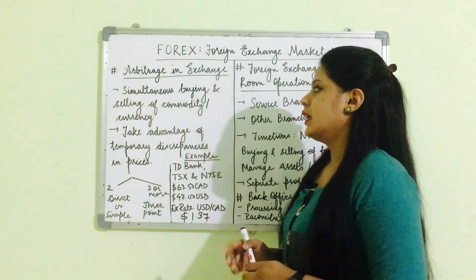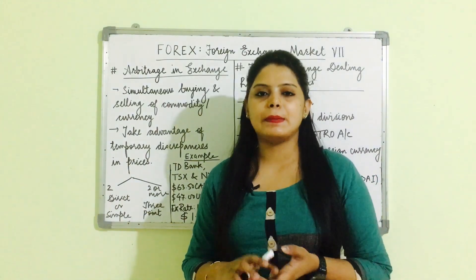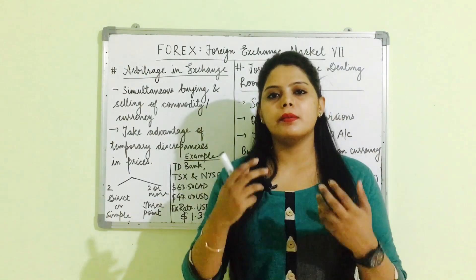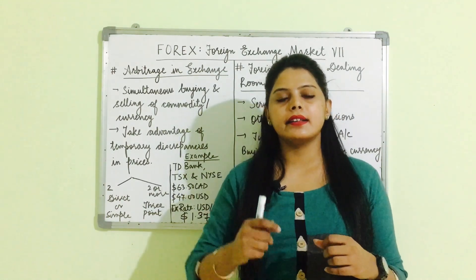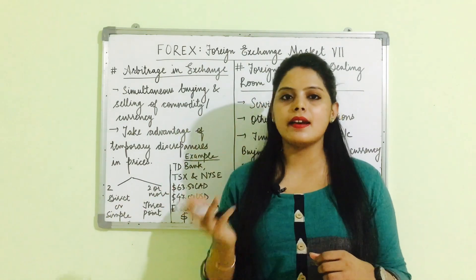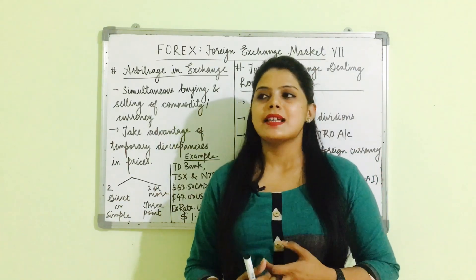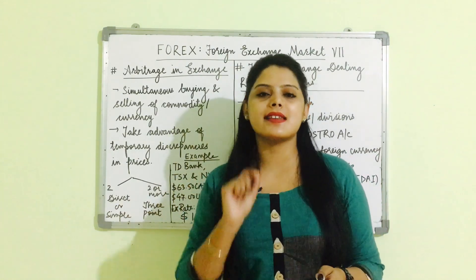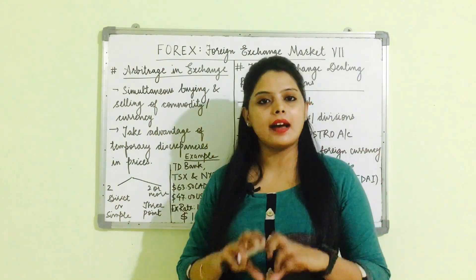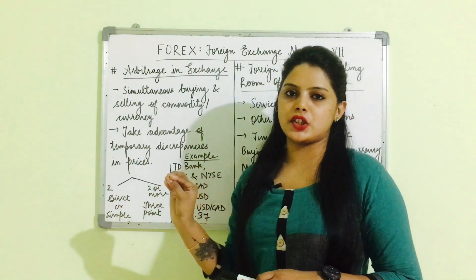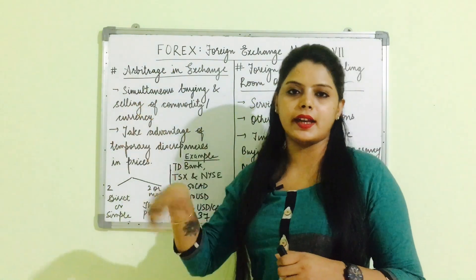The first topic is arbitrage. Arbitrage is the simultaneous buying and selling of a commodity or currency. Traders who deal in any market — stock exchange, foreign exchange, or commodity market — their main purpose is to earn profit. Arbitrage is the process or medium through which currency traders can earn money.